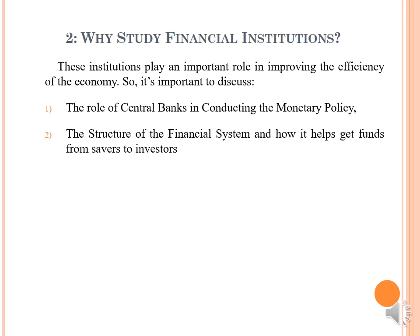The second point covers the structure of the financial system and how it helps get funds from savers to investors. The financial system consists of three main components: the first is financial markets, the second is financial institutions, and the third is financial claims.